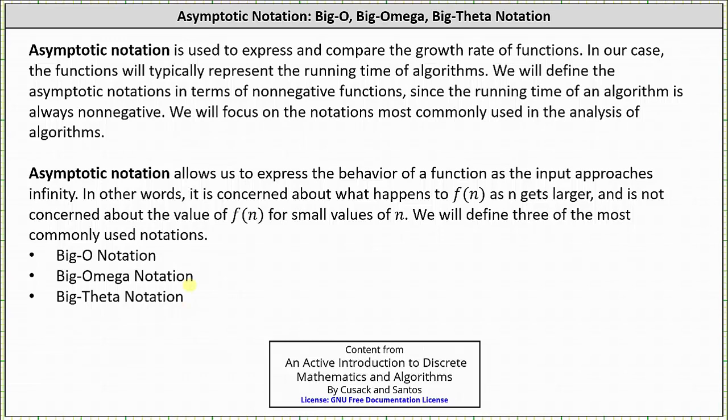Asymptotic notation allows us to express the behavior of a function as the input approaches infinity. In other words, it is concerned about what happens to f of n as n gets larger, and is not concerned about the value of f of n for small values of n.